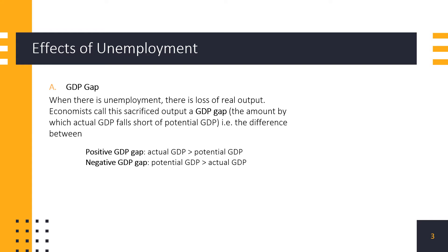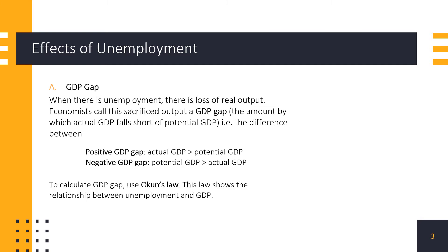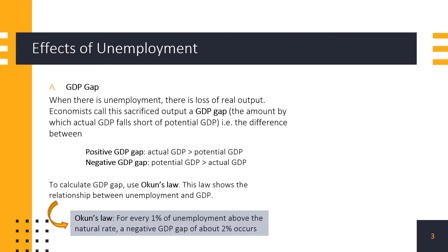As you can see here, if our actual GDP is more than potential GDP, we will have a positive GDP gap, which is a good thing. But if our actual GDP is much less than the potential GDP we could have gotten, then we would have a negative GDP gap. There is a way to calculate this GDP gap using Okun's Law, which shows the relationship between unemployment and GDP. According to Okun's Law, for every 1% of unemployment above the natural rate of unemployment, a negative GDP gap of about 2% occurs.